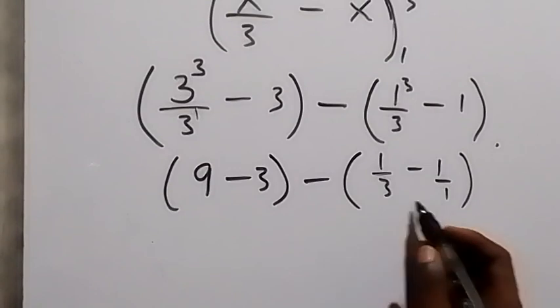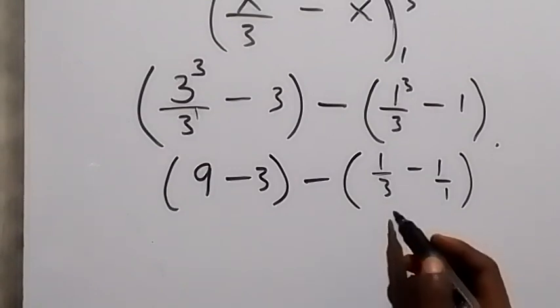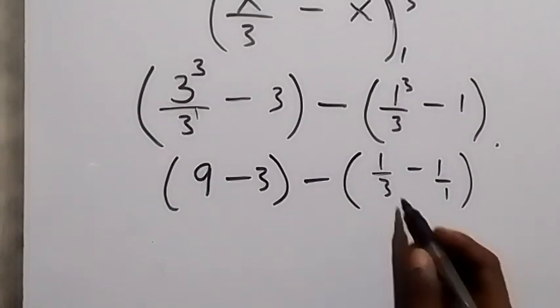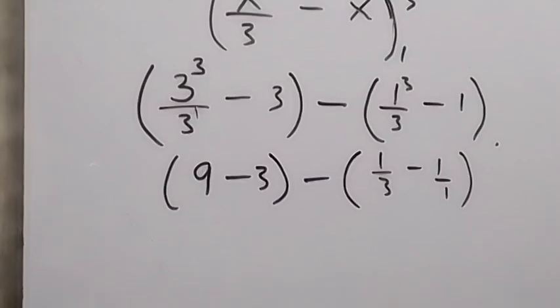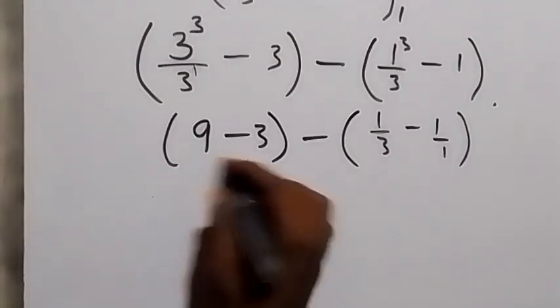When you solve this bracket, you have 3 here as the common denominator. That will be 1 minus 3, that's minus 2 over 3. So here gives us 6.